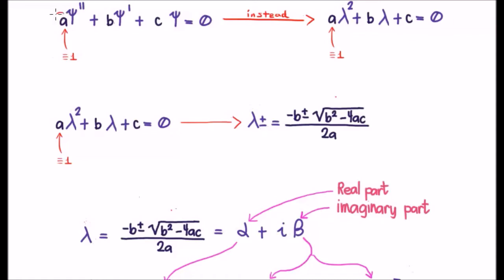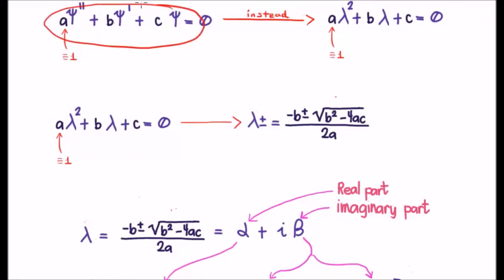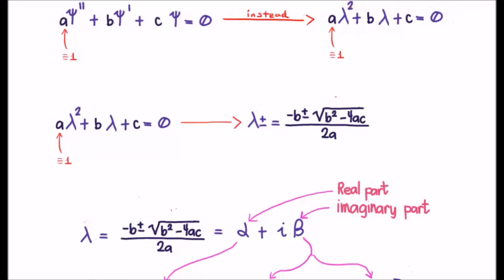The important point to note is that we have a coefficient of 1; 'a' must always be 1. If for some reason you have some other coefficient there, you must divide across by it to make sure that a equals 1. If you have this form of differential equation, you can solve the characteristic equation — shown on the top right of your screen. Basically, we make a quadratic equation in lambda and use the coefficients a, b, and c from our differential equation.